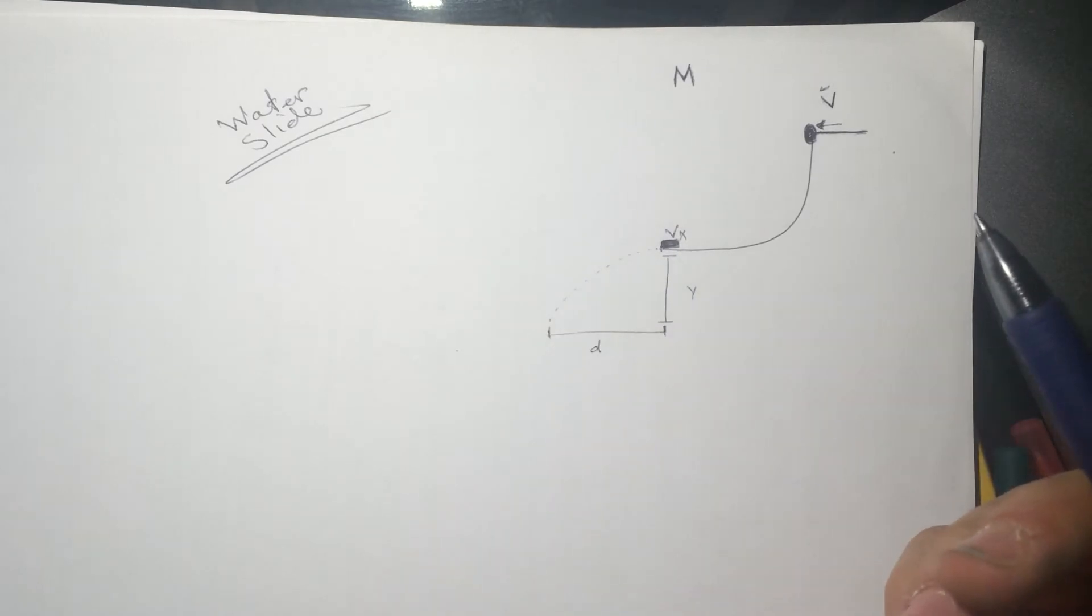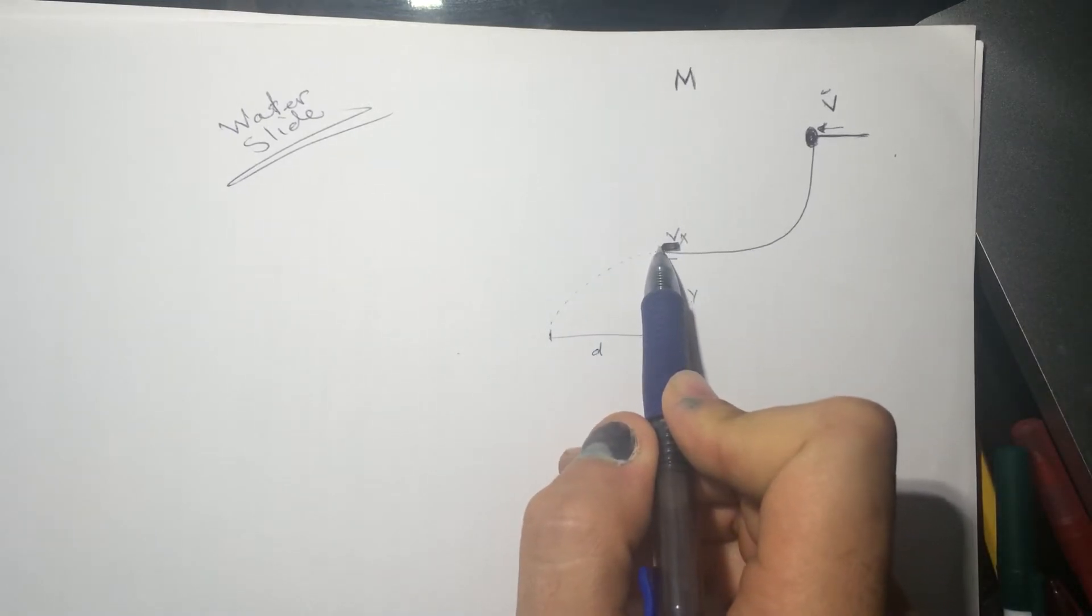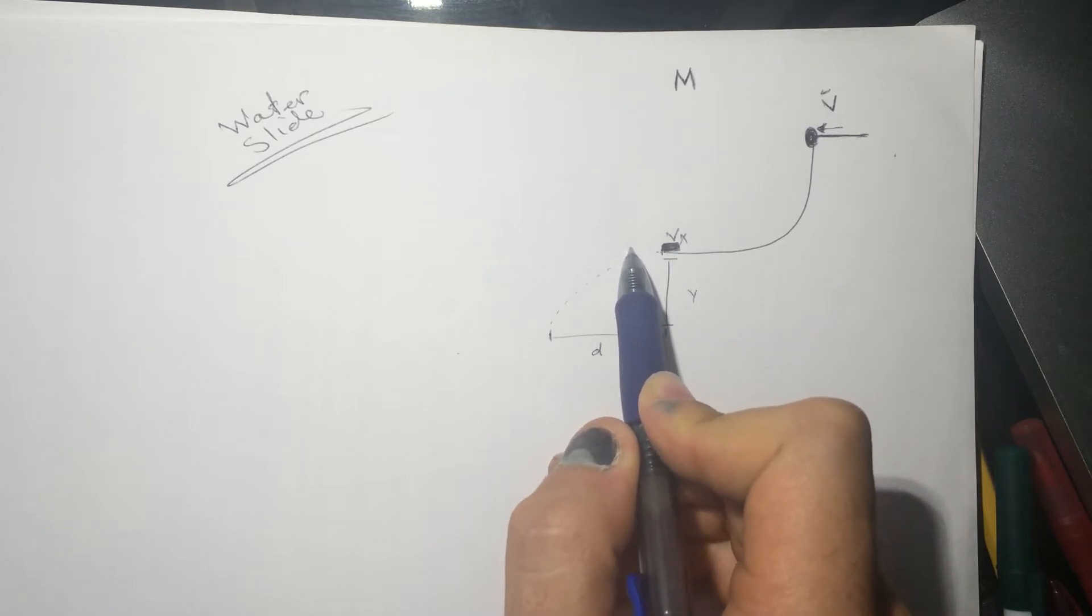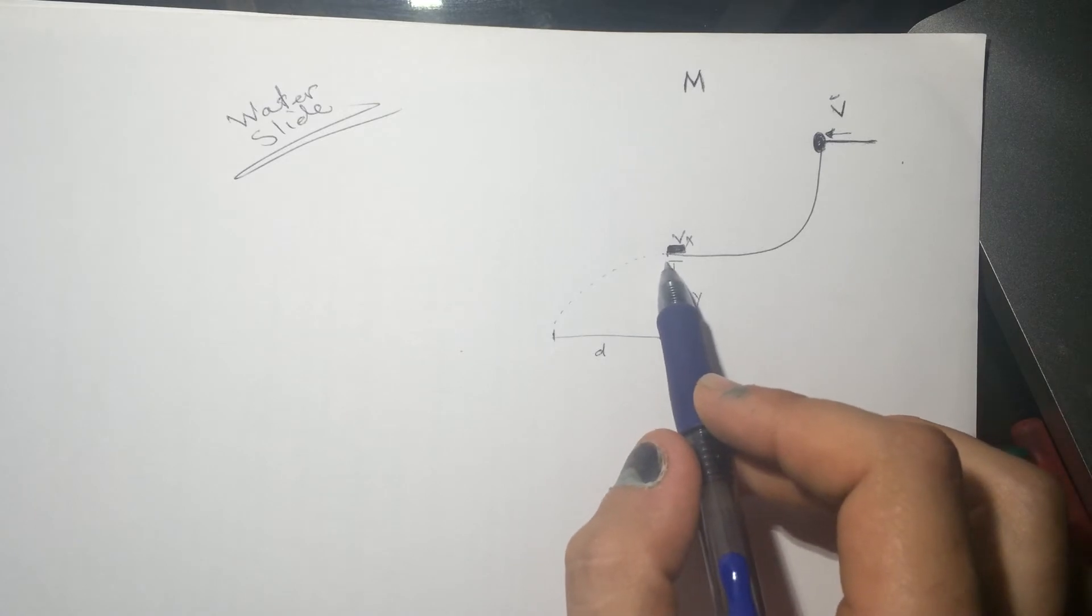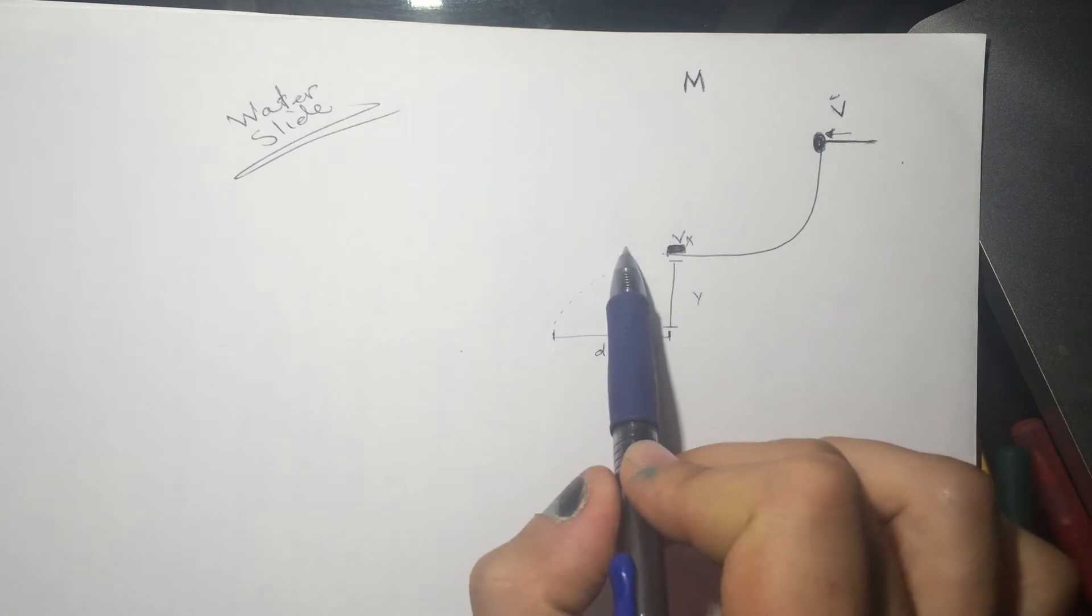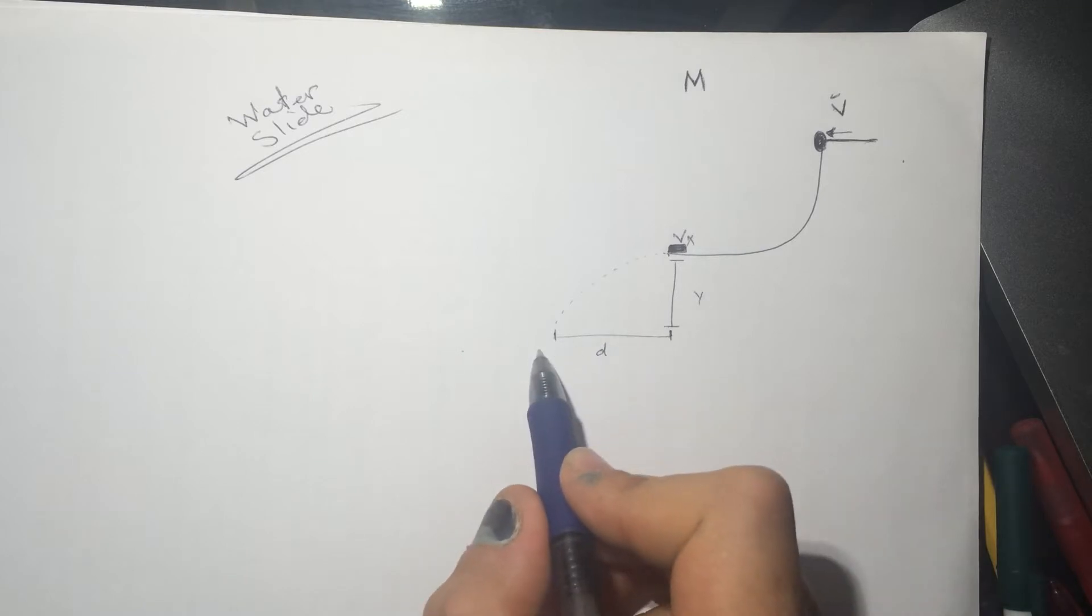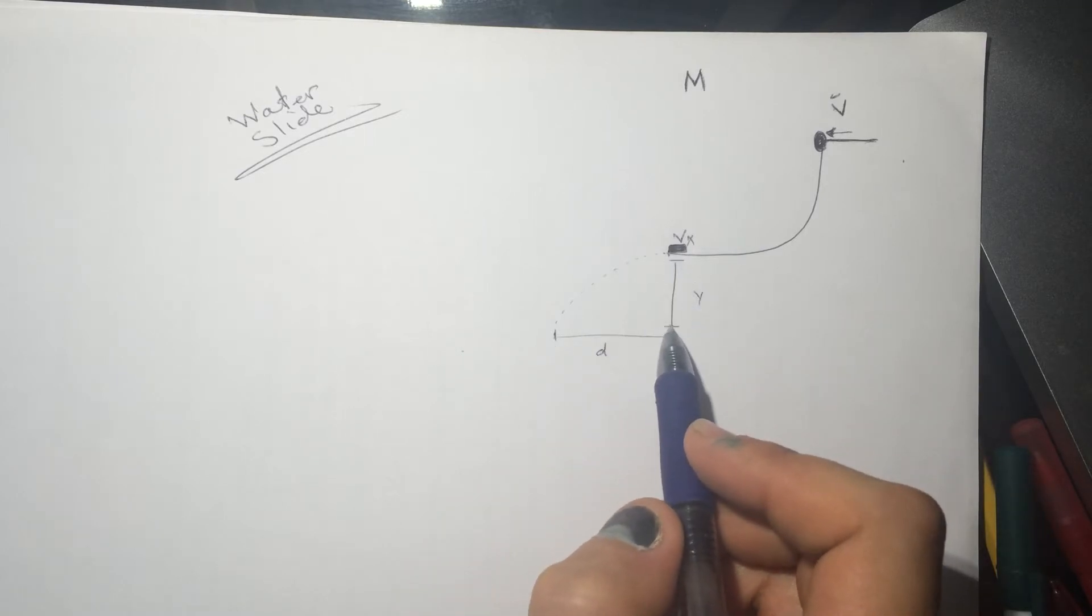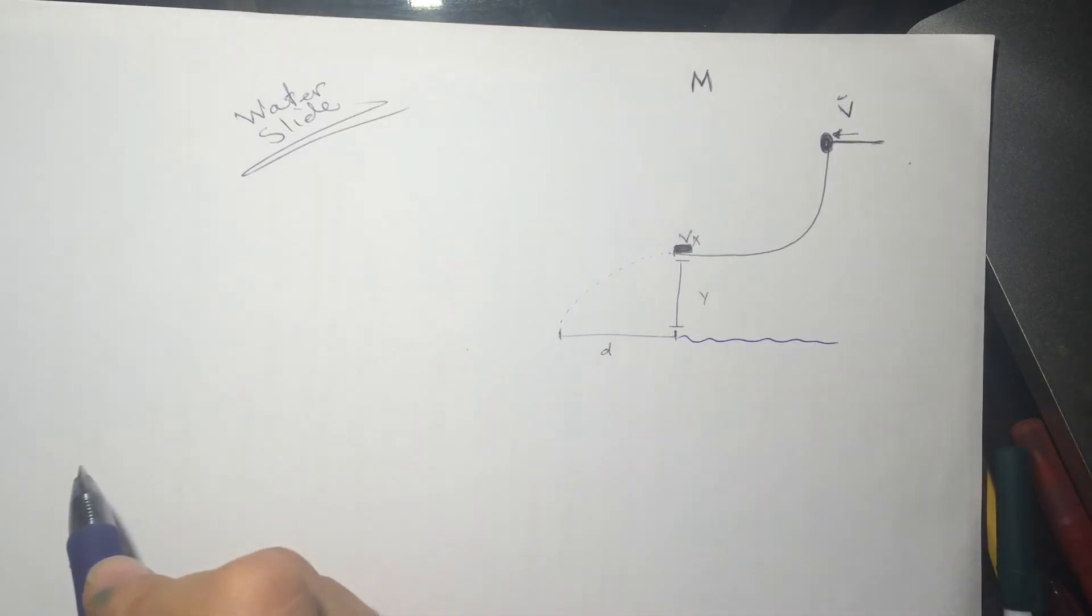And what does that tell us? That tells us that if the whole thing was in the X direction, the V is in the X direction, that means that the VY is 0. The VY is 0 because it's going to start from 0 here because there was no initial velocity to it because everything was in the X direction. And they gave us the D, which is the distance from here to here. And the Y is the distance between the slide and the water. So there is water here.